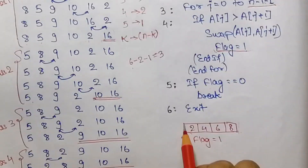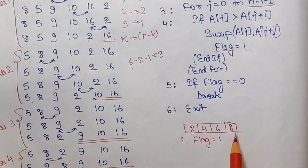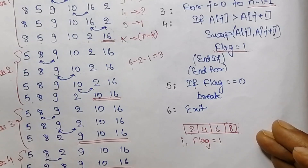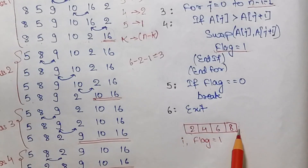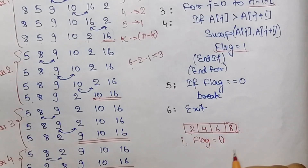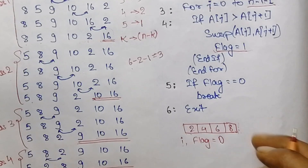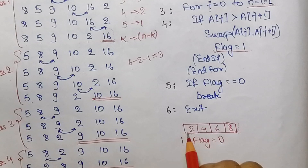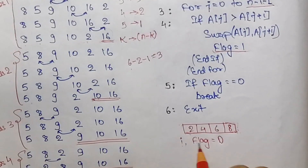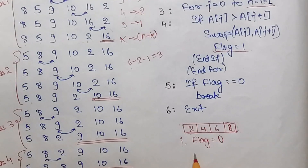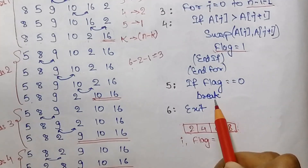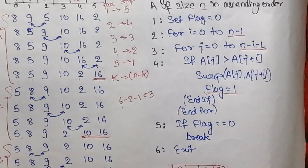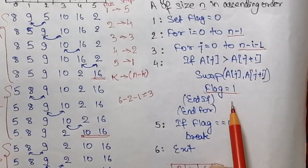Let's understand the flag variable. Consider an already sorted array. If we need to sort this array, then for any specific i value there will be n loops, but we do not need to swap any element. So the flag will remain 0 as we declared flag equals 0 in the first step. But if there is any swap, the flag value will change to 1. In this case there will be no swap, so flag will remain 0. Within the loop, we will check: if flag equals 0, then break — meaning if the array is sorted before the n iterations, we simply come out of the loop.